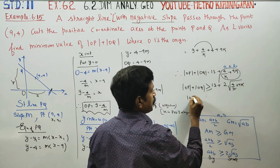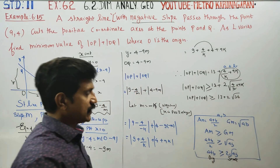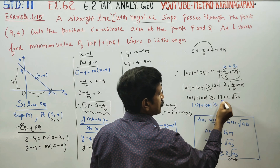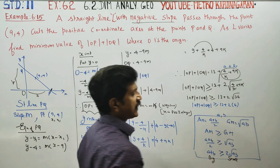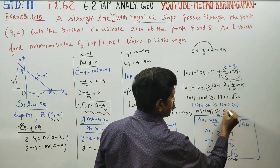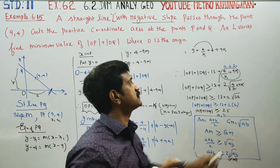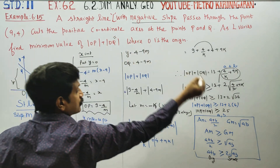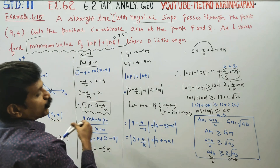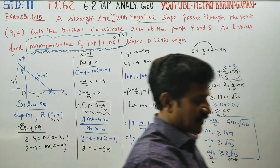So OP + OQ ≥ 13 + 2 times √36. Since 9 × 4 = 36, √36 = 6. Therefore OP + OQ ≥ 13 + 2 × 6 = 13 + 12 = 25. The minimum value of OP + OQ is equal to 25. This is the final answer.